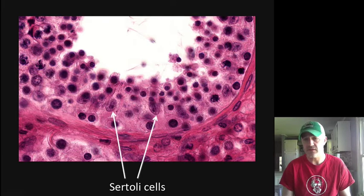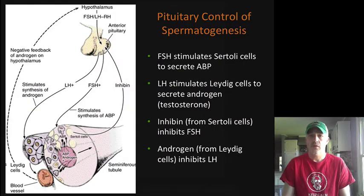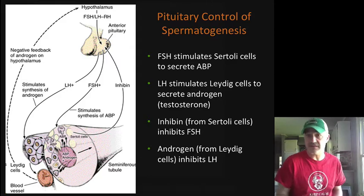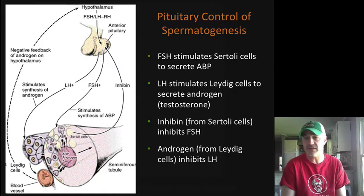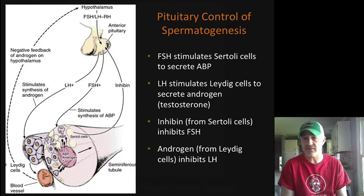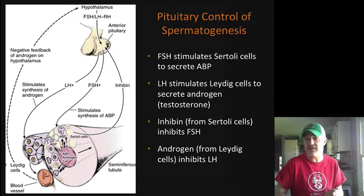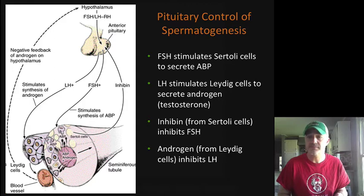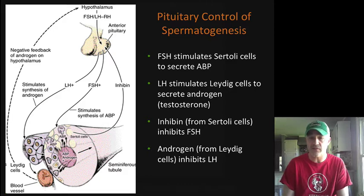You can see the Sertoli cells are larger cells versus the more compact spermatids and primary spermatocytes. In terms of regulation: follicle stimulating hormone (FSH) acts on the Sertoli cells to secrete androgen binding protein, and LH acting on the Leydig cells causes secretion of testosterone, which acts on the spermatids along with androgen binding protein to facilitate their development. If levels get too high, inhibin is released by the Sertoli cells to inhibit FSH release, and testosterone feeds back to the hypothalamus to inhibit LH release if levels are high enough.